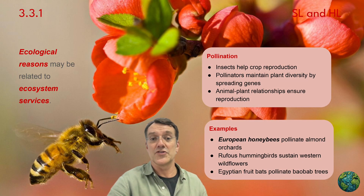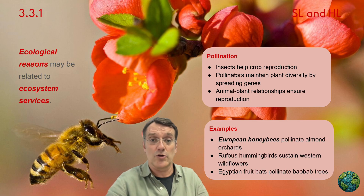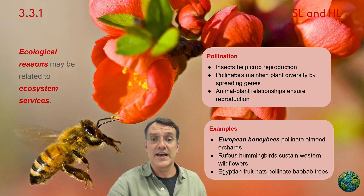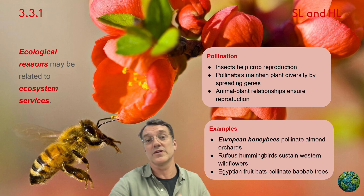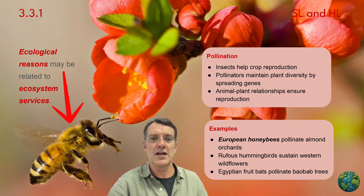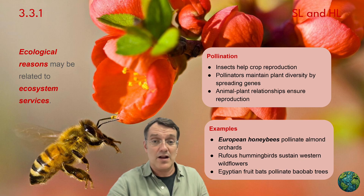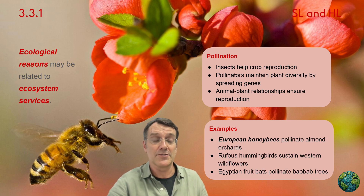Ecological reasons for conservation often relate to ecosystem services. Pollination is a prime example. Insects help crop reproduction, while pollinators maintain plant diversity by spreading their genes. These animal-plant relationships ensure successful reproduction across ecosystems. Examples include European honeybees pollinating almond orchards, rufous hummingbirds sustaining western wildflowers, and Egyptian fruit bats pollinating baobab trees. Without conservation efforts to protect these pollinators, many plant species and agricultural systems will collapse.